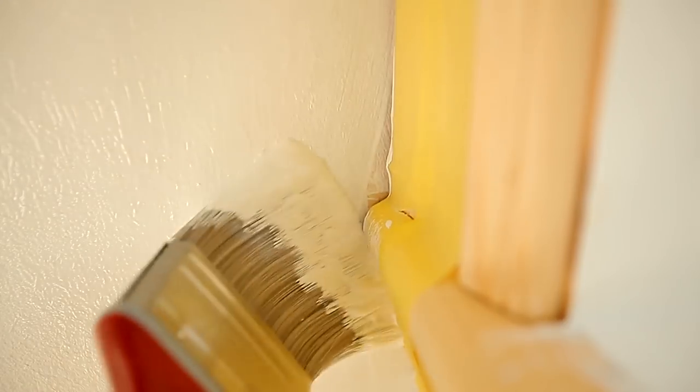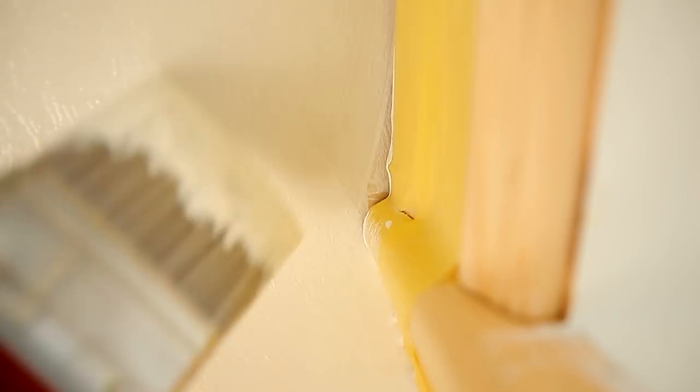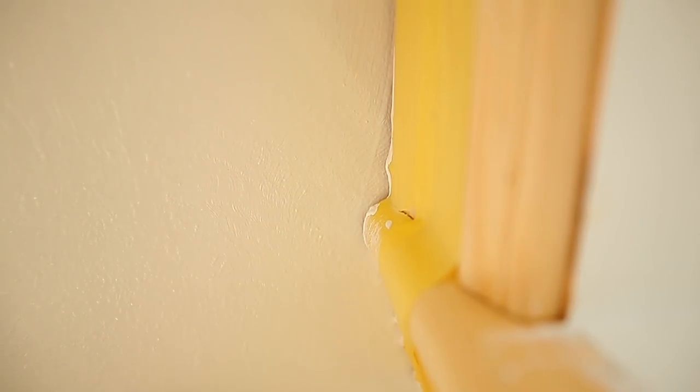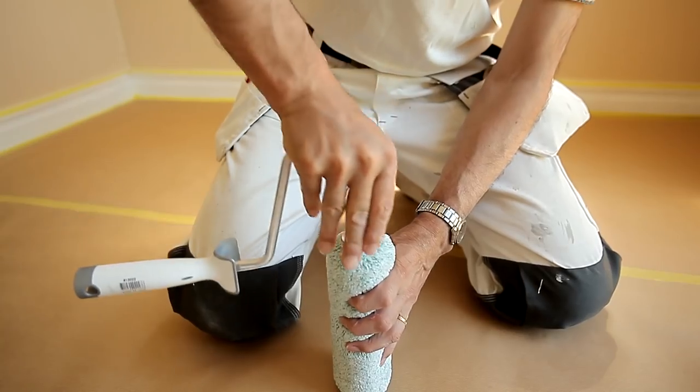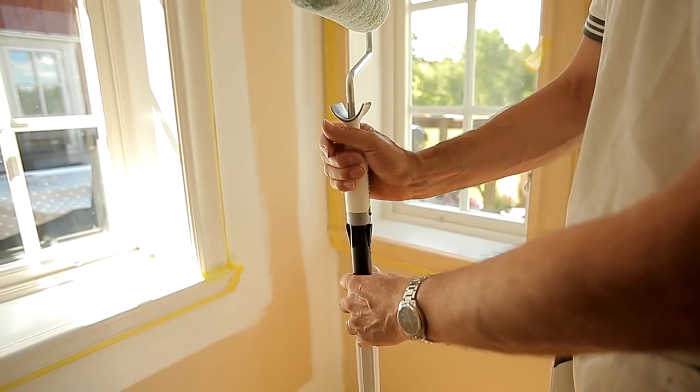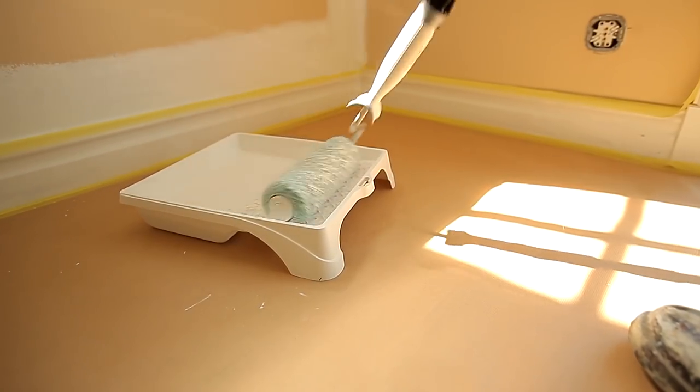You can use the brush to stipple the areas that can't be accessed with the roller in order to produce the same structure as a rolled surface. Assemble the large roller. Use an extension pole to save time and to give you a better working position.